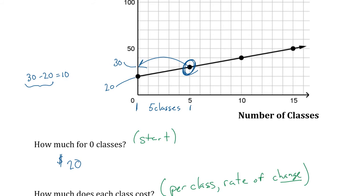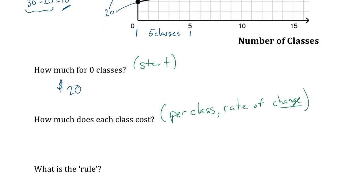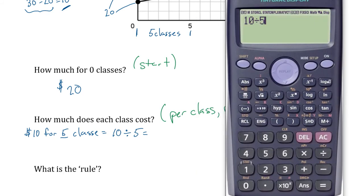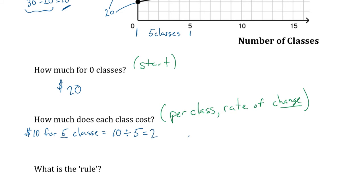Why is $6 wrong? Because I didn't start at zero. Five classes does cost you $30, but that's because of the $20 that's built into it. So the five classes actually changed the cost from $20 up to $30, which is a change of $10. So $10 for five classes is 10 divided by 5 — feel free to use your calculator — which gives 2. Therefore, $2 per class is the change, or the cost per class.